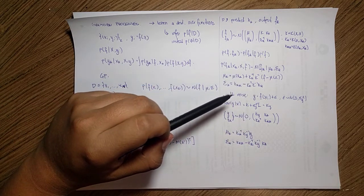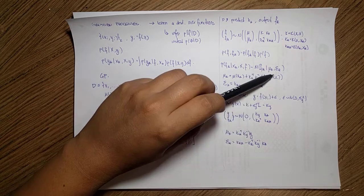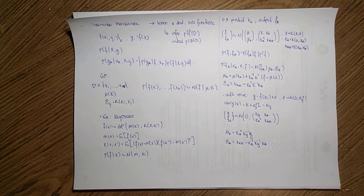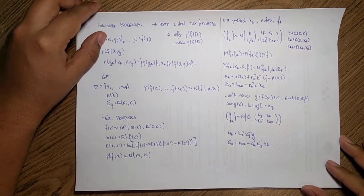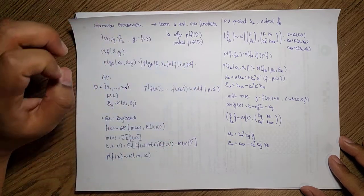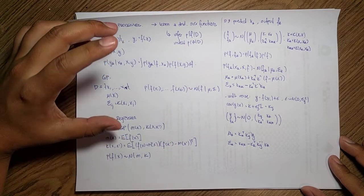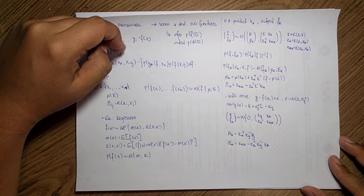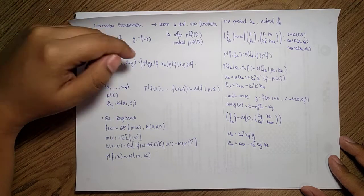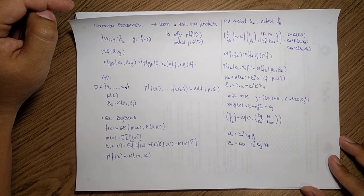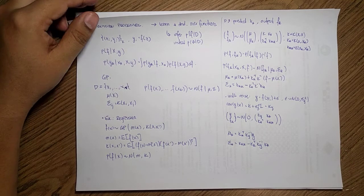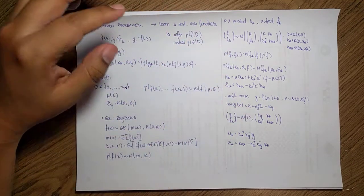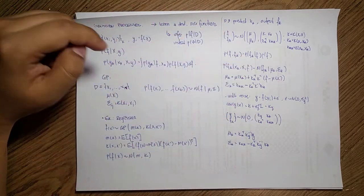That's the introduction to Gaussian processes. We will continue and discuss a bit more. As a summary: GPs generalize what we've been doing — I don't have to commit to a particular shape for my distribution. I just use the marginalization power to take all possible F's with respect to the family of functions I define. In the next part, we'll talk about how to estimate the parameters of the Gaussian process.